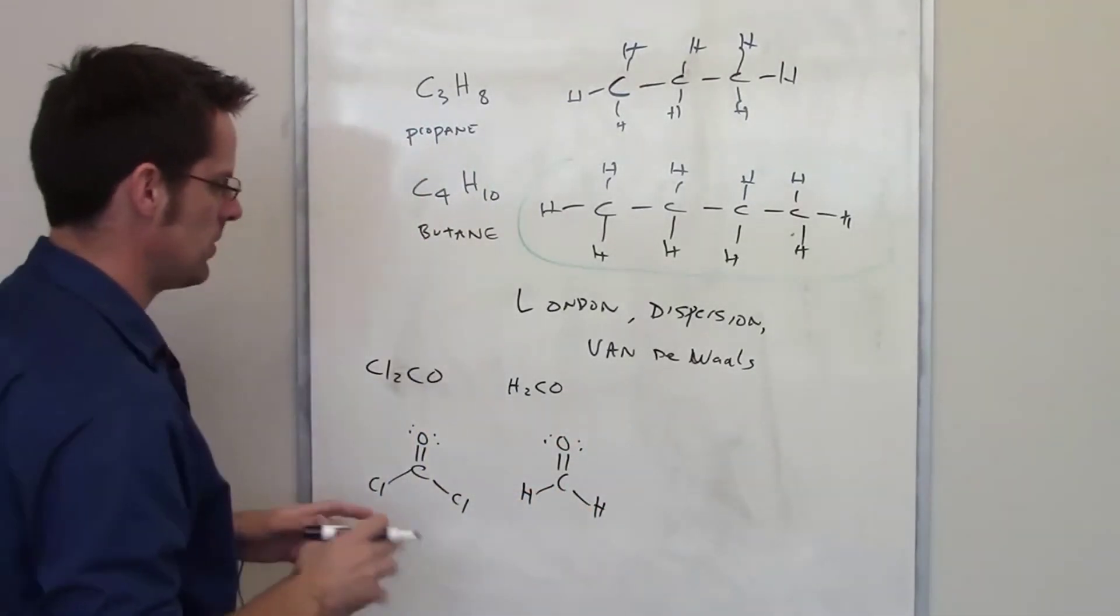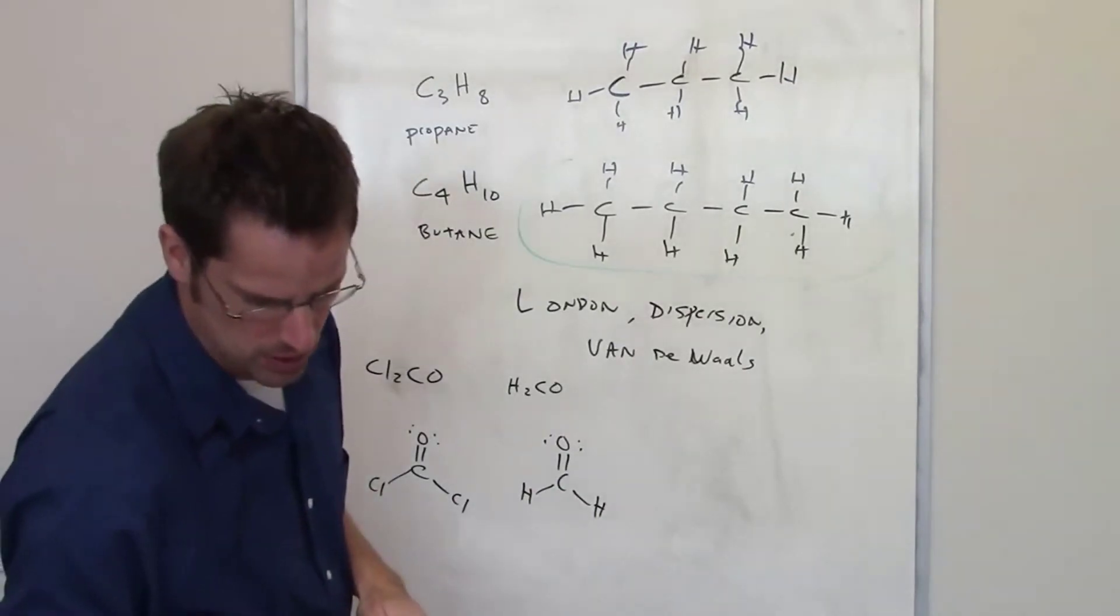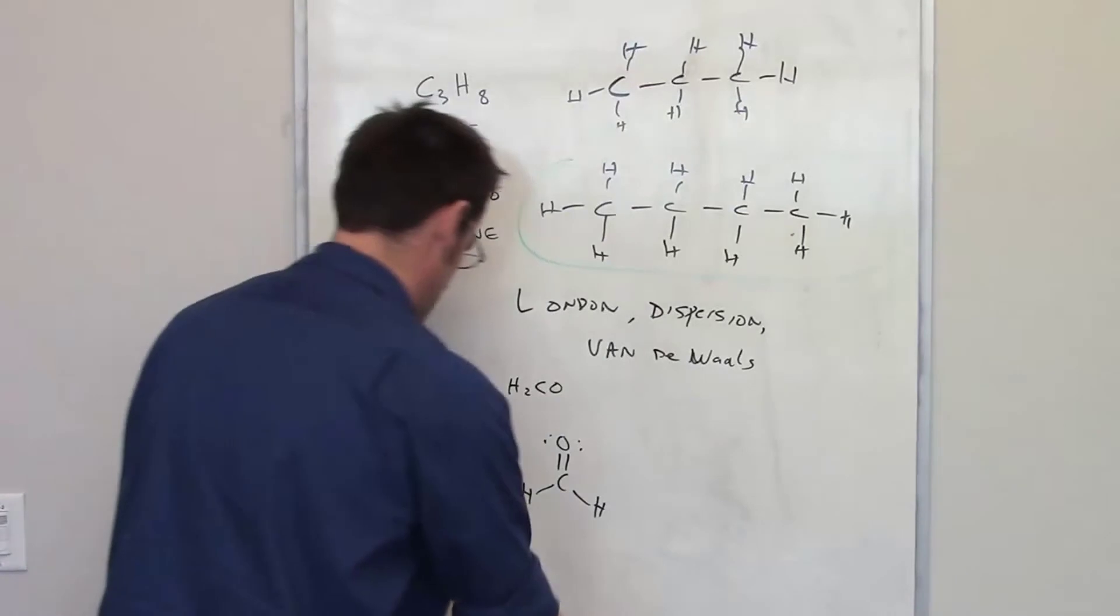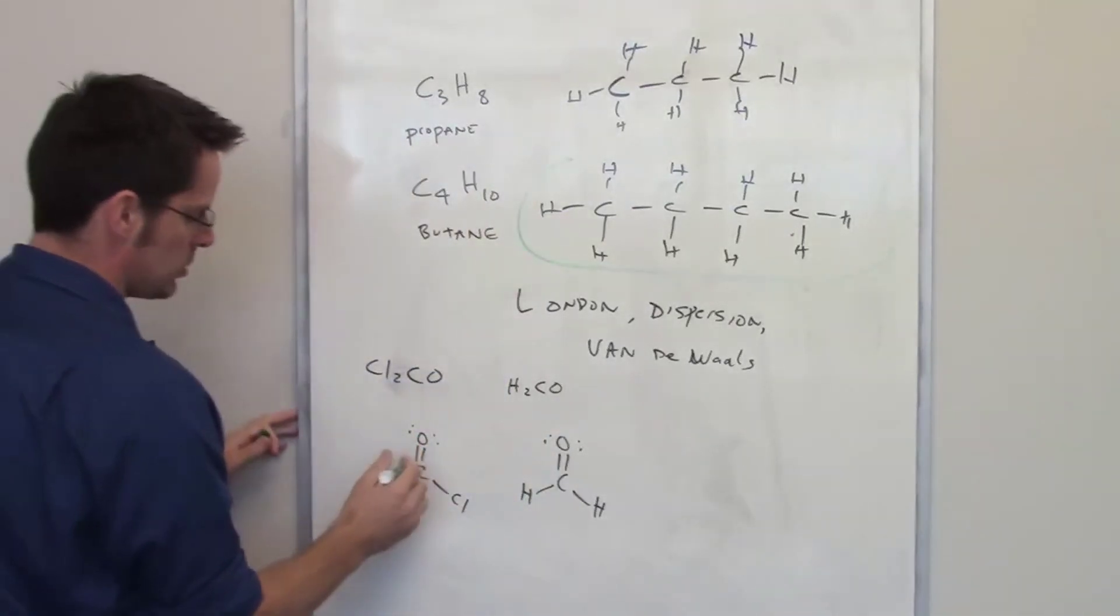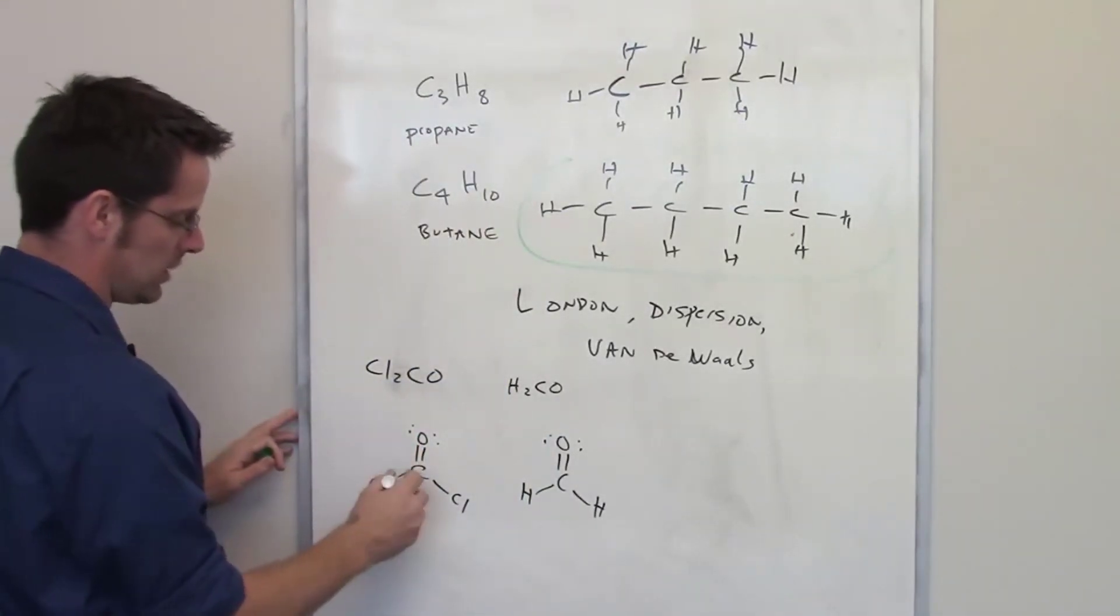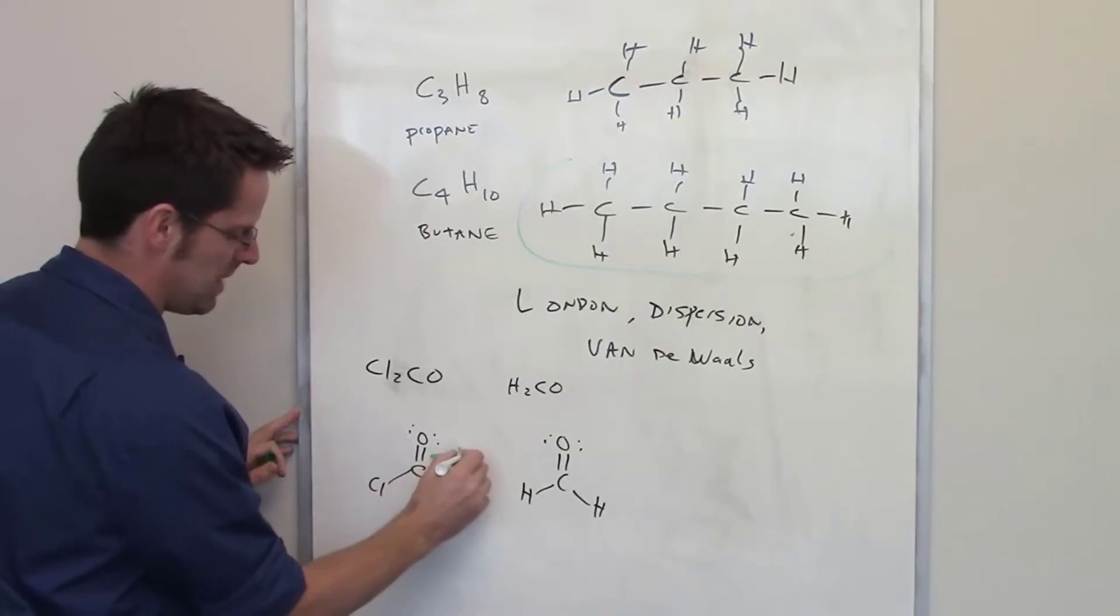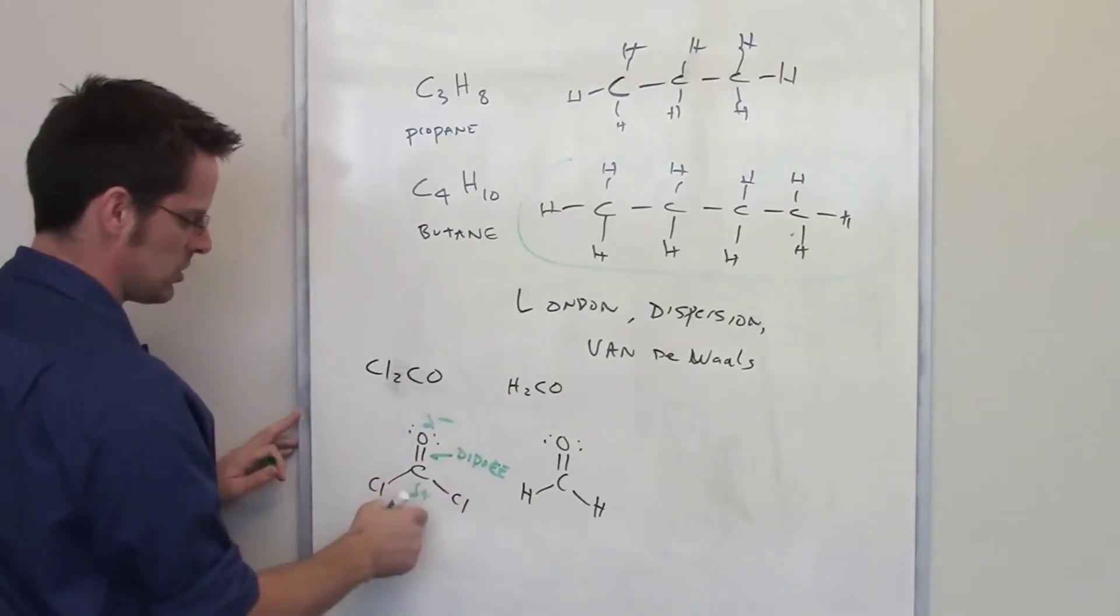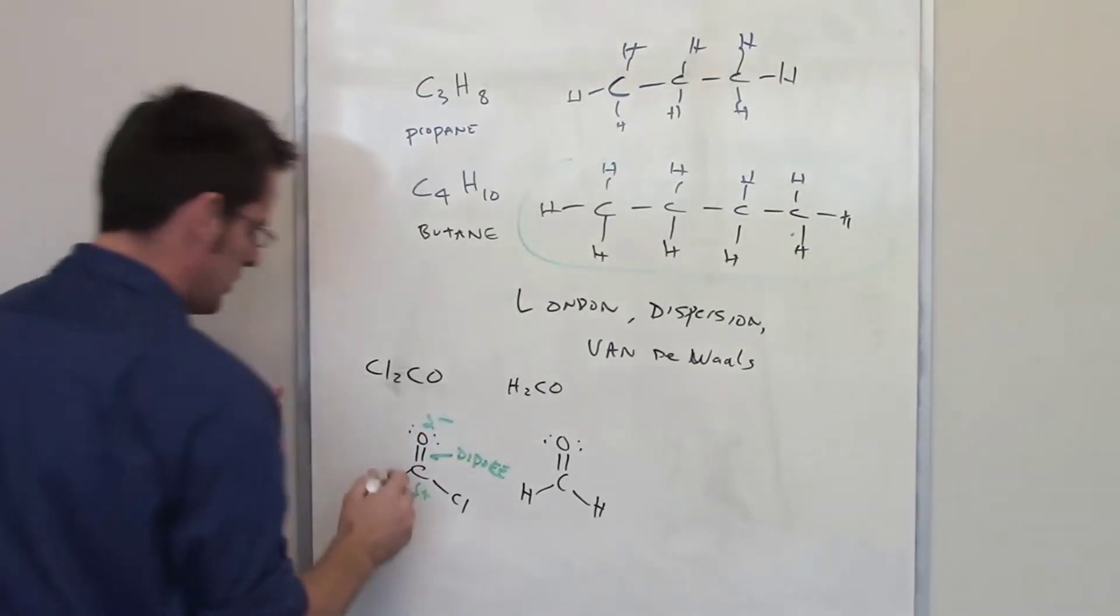So the first question is, what types of intermolecular forces do these have? You'll notice that oxygen is much more electronegative than carbon; therefore, you have a dipole there—a relatively strong partial negative on the oxygen is strong partial positive on the carbon. Similarly, chlorine is more electronegative than carbon, so once again you also have dipoles here.